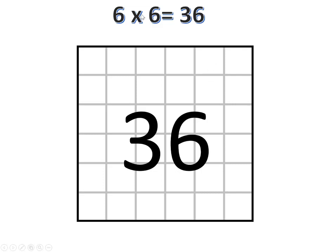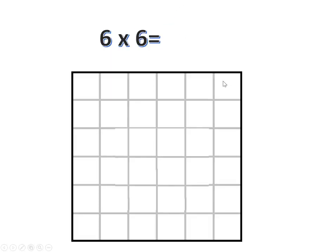And here's our perfect square. Six times six is 36. Six times six is what? 36.